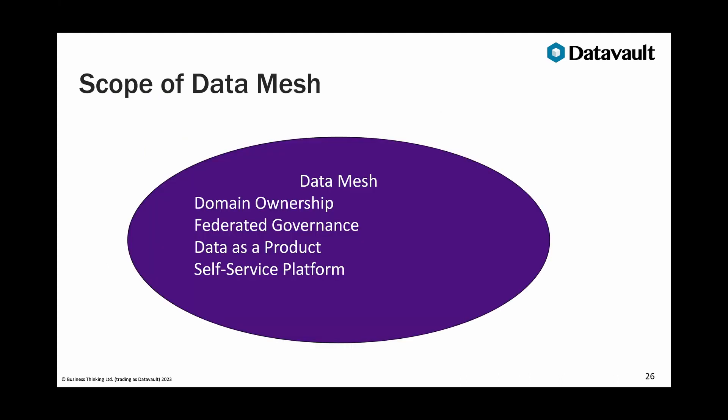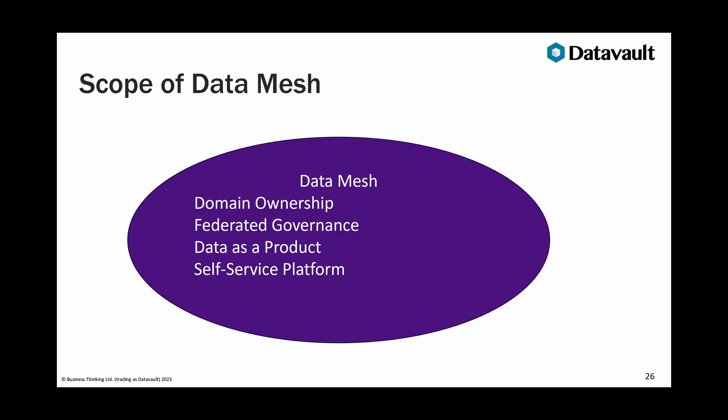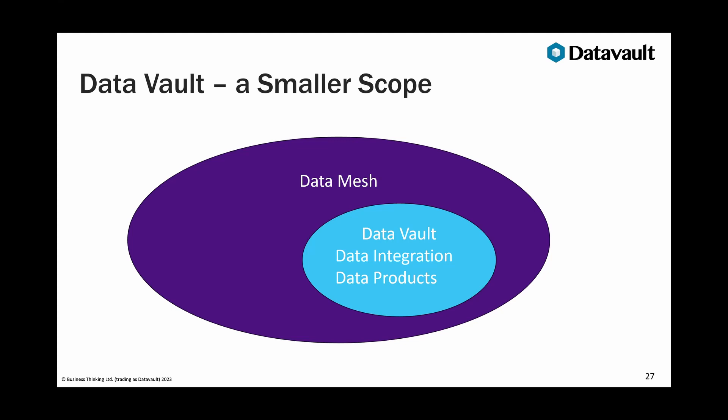Data mesh talks about domain ownership, governance, data as a product, and a self-service platform. Data vault talks about data integration and data marts — really data products if you look at it that way. Data vault is a smaller scope than data mesh: it's trying to address what you build, whereas data mesh looks at the whole ecosystem around your data. This is the first clue as to how these systems can work together — data integration fits in the domain area and governance area, so they can work together if data mesh allows data vault to take ownership of some design elements.